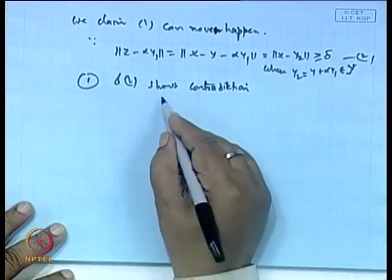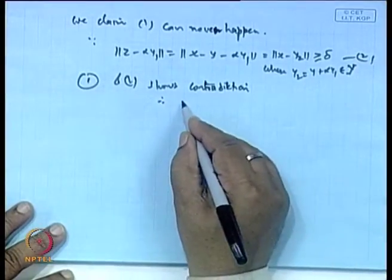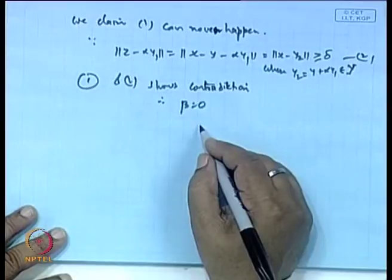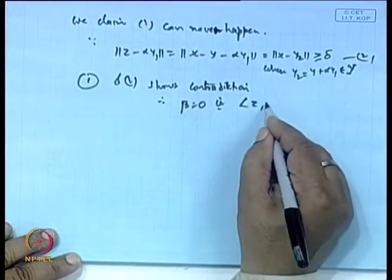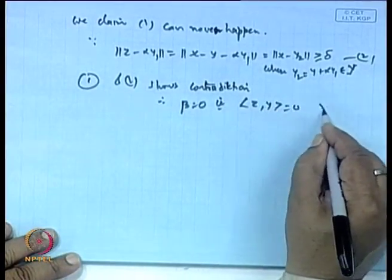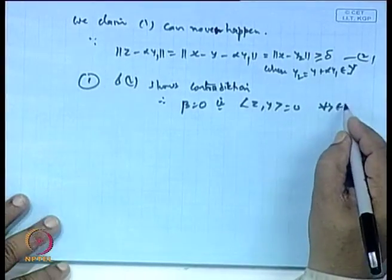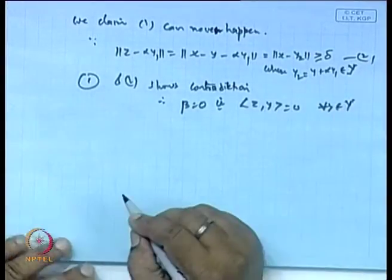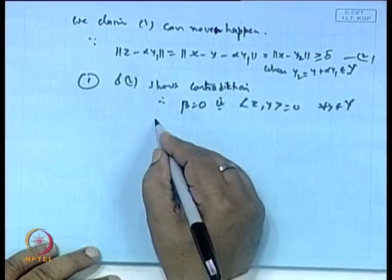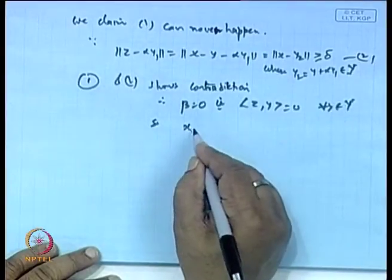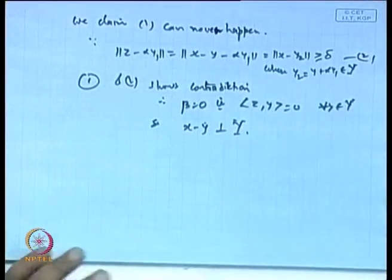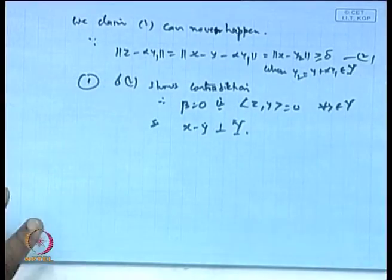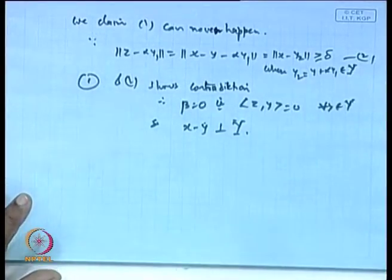Therefore our assumption is wrong. Hence β must be 0, meaning the inner product ⟨Z, y⟩ = 0 for every y in Y. So x minus Y is perpendicular to Y. This gives the projection theorem.